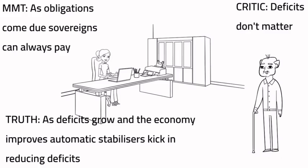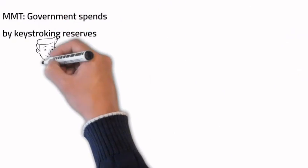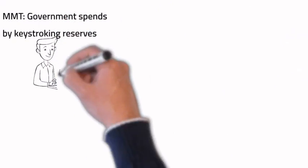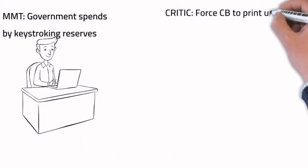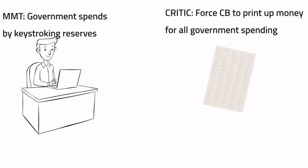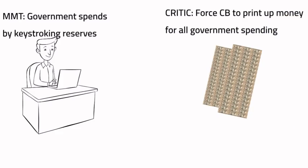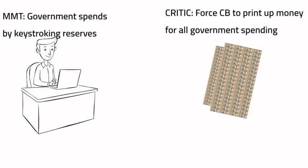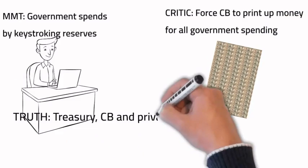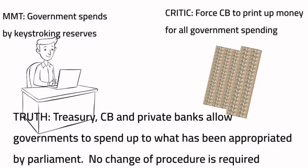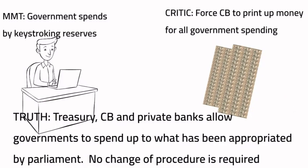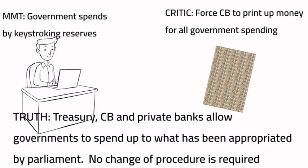MMT says government spends by keystroking reserves into existence. Critics say it is all about forcing central banks to print up money for all government spending. The truth is the current procedures adopted by the Treasury, central bank, and private banks allow government to spend up to the budget approved by parliament — no change of procedure is required.